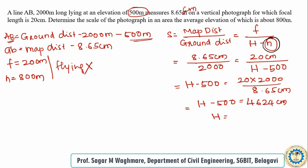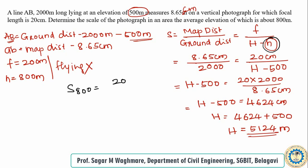H equals 4624 plus 500, which comes to 5124 meters. This 5124 meters is the flying height. Now to find the scale at 800 meters elevation: focal length is 20 centimeters, H is 5124, minus elevation of 800 meters. Solving this gives a scale of 1 centimeter divided by 216.2.